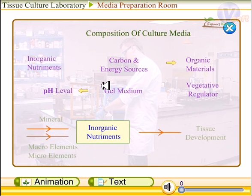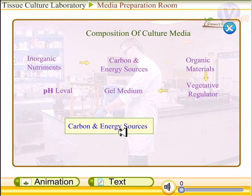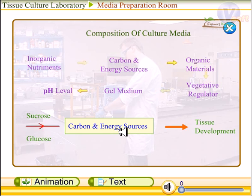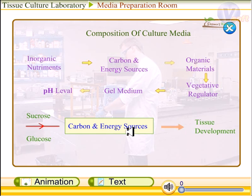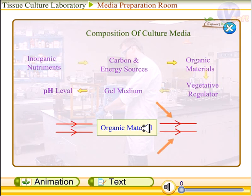The first component is inorganic nutrients — minerals, macro and micro elements — which help the plant to grow. The second is the carbon and energy source; sucrose and glucose are the most important, providing the energy for the plant cell to perform photosynthesis and produce suitable energy for growth.